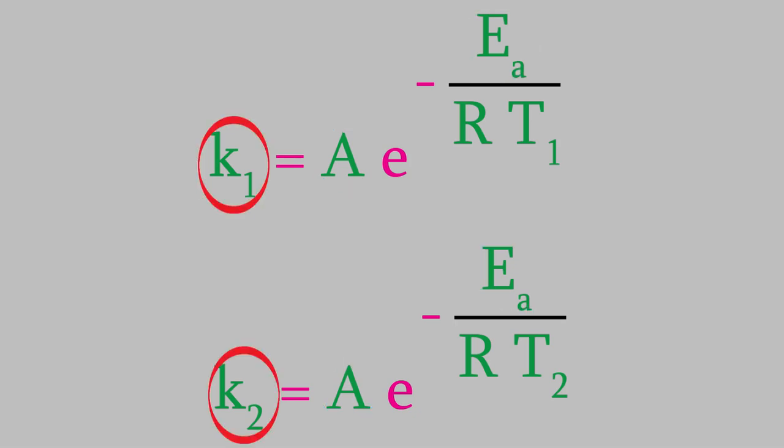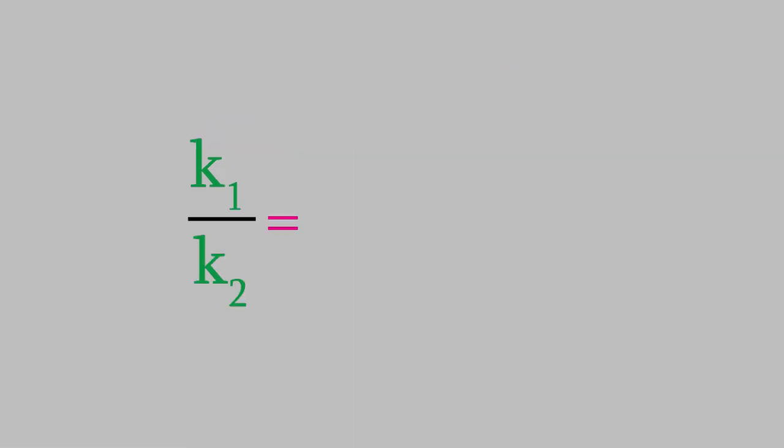Remember, what we want to do is come up with an equation without A in it. We can do that by dividing these two equations. Imagine what we'll get if we divide the first equation by the second one. On the left side, we get k1 divided by k2. On the right side, we get this.